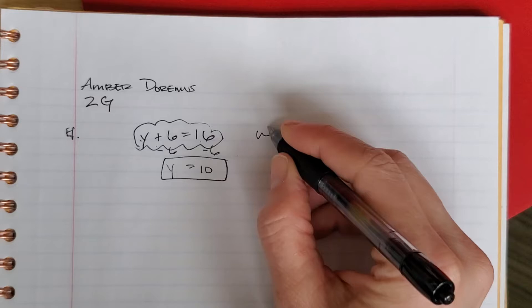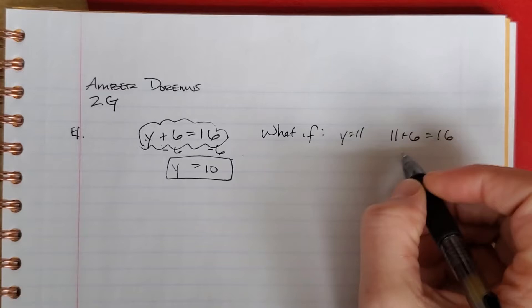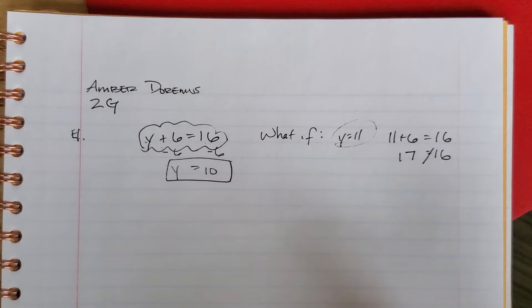What if we said y was equal to 11? And we substitute the value of the variable. And we said 11 plus 6 should equal 16. But 11 plus 6 is 17, Ms. D. I know. That means y can't be 11.